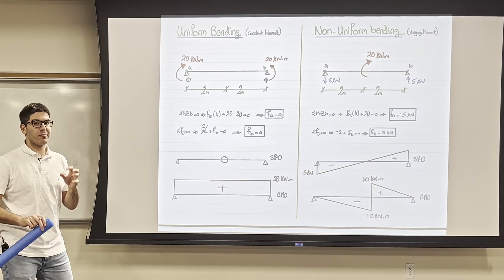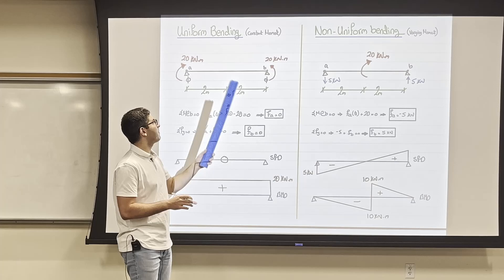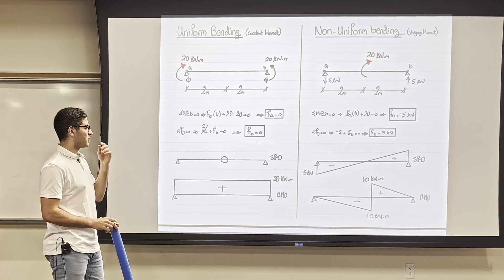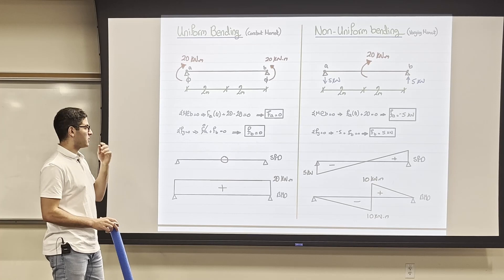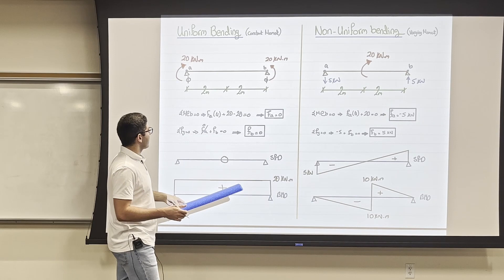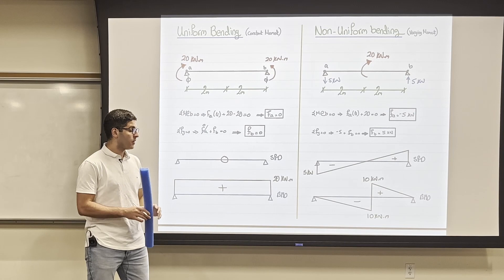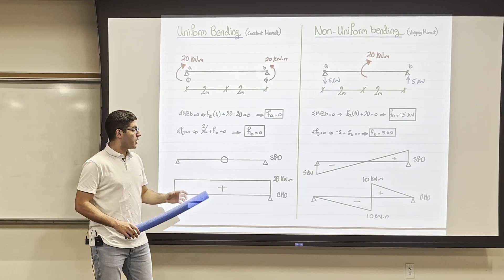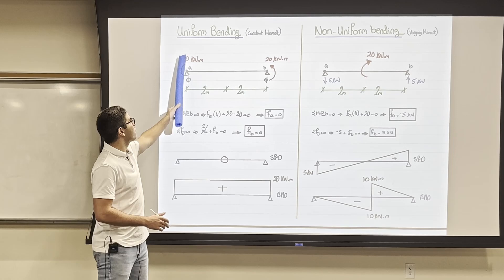Another concept I need to explain is uniform and non-uniform bending. When I have a concentrated bending moment at the ends, the reactions at the supports equal zero, and therefore the shear force diagram is zero. If the shear force diagram is zero, the moment is constant — and if the moment is constant, meaning it's not varying, we call it uniform bending.